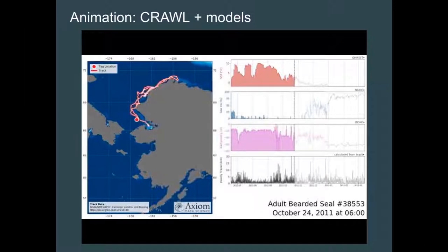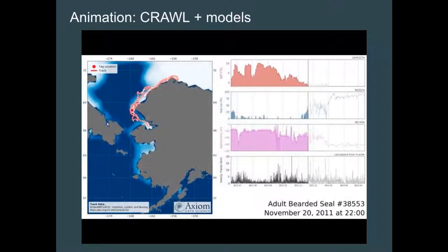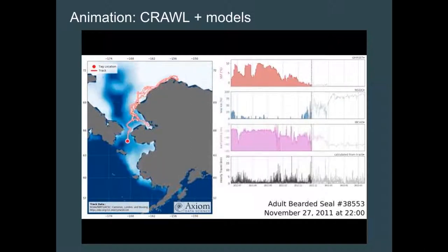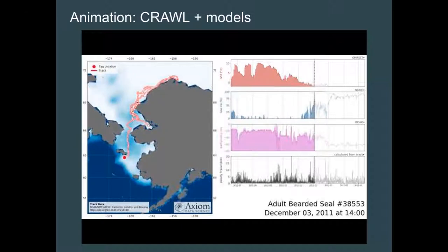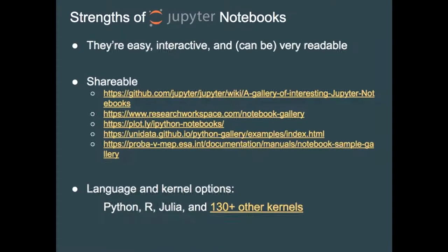The sea surface temperature is from the Global High Resolution SST product, sea ice from the NSIDC product, bathymetry from the International Bathymetric Chart of the Ocean, and on the bottom, hourly travel speed for the seal. Something like this would have been much harder to do locally on a desktop, but using notebooks in the cloud co-located with data storage, it's pretty fast. The animation shows the seal coming down following the ice into winter.